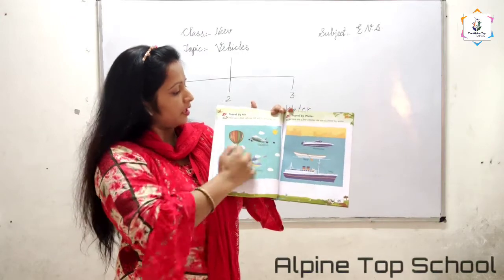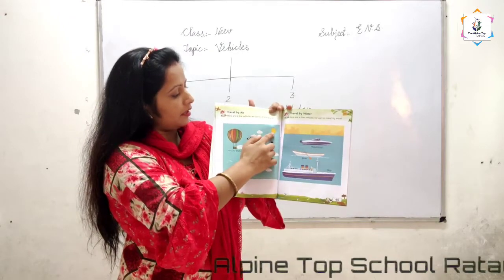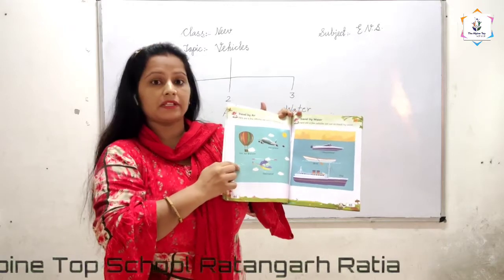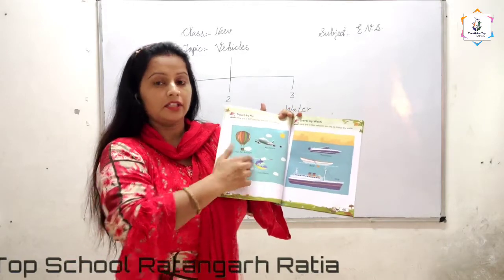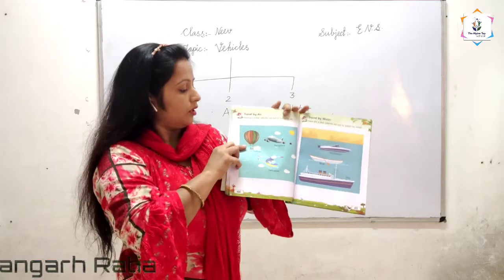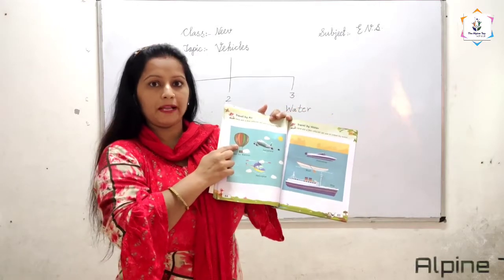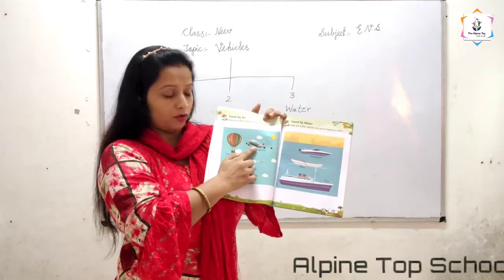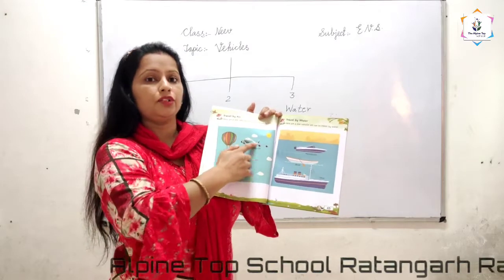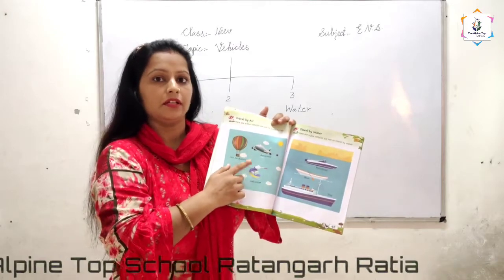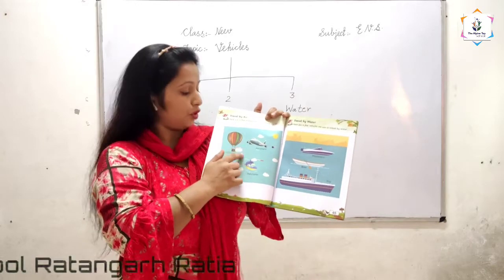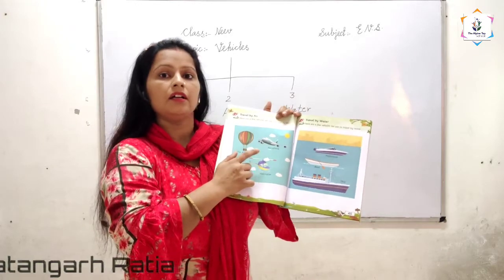Look: this is the sky. The sun is there, clouds are there, and birds are there. These vehicles fly in the sky. First is hot air balloon. Next is aeroplane. And next is helicopter. These vehicles are air vehicles — they fly in the sky.